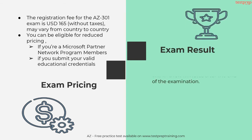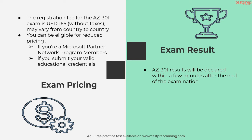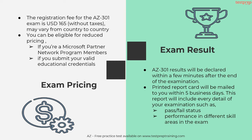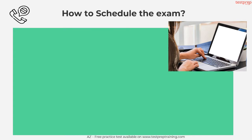Exam Results: AZ-301 results will be declared within a few minutes after the end of the examination. A printed report card will be mailed to you within five business days. This report will include every detail of your examination such as: pass or fail status, performance in different skill areas, and overall performance. Now we will discuss how to schedule the exam.